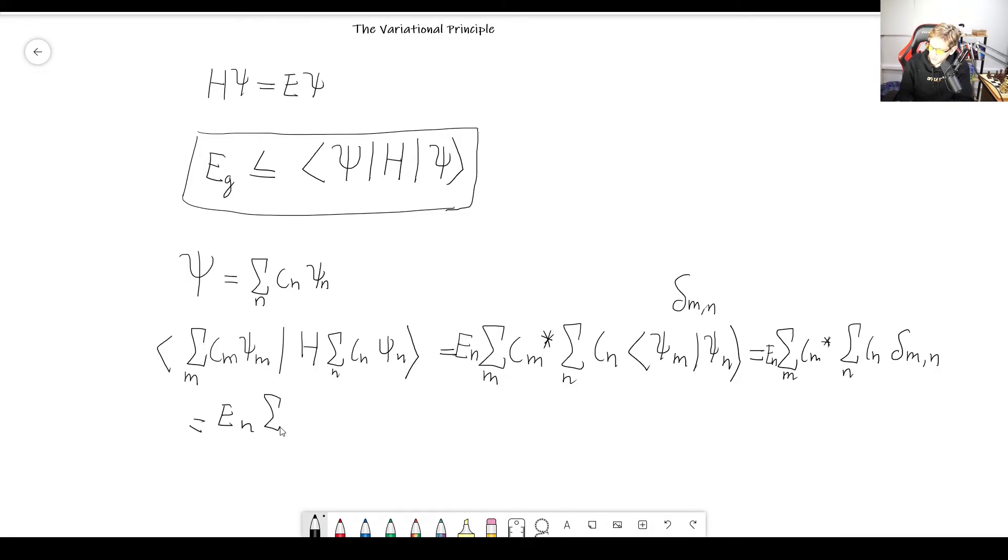So we are left with, let's stick with the N. So sum of C_n conjugate C_n. But this is simply |C_n|^2, right? And what is the sum of |C_n|^2? Well, this has to be one. This is something we've seen before. If we're writing our state as a linear combination of all the wave functions, their probabilities added up has to be one. And that means that this entire thing here is simply E_n, so that energy level.